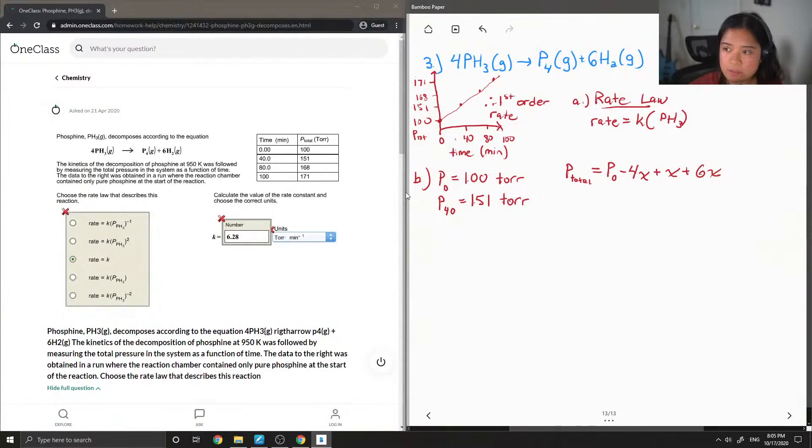So 1 is from this P4 and then this is from the 6H2. So then I can simplify this further just by doing P total is equal to P initial plus 3x.